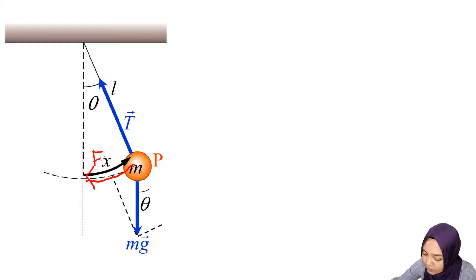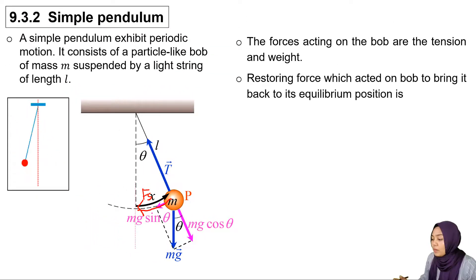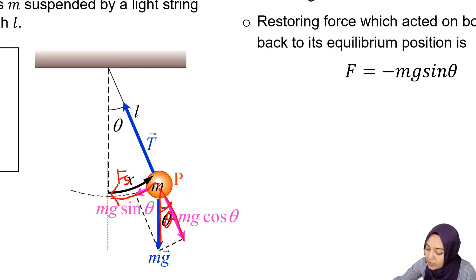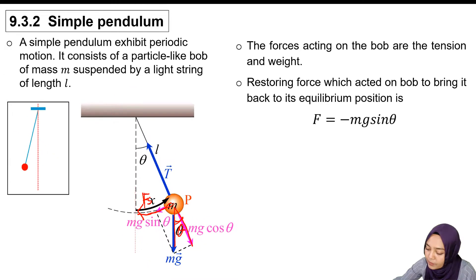The forces acting on the bob are the tension and the weight. The restoring force which acts on the bob to bring it back to its equilibrium position is F = -mg sin θ.